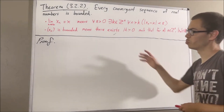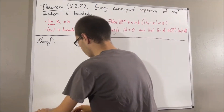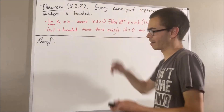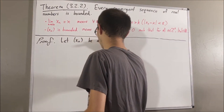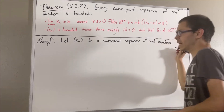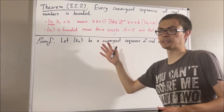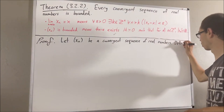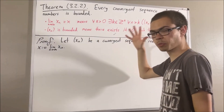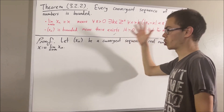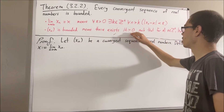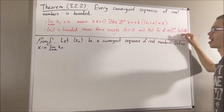Okay, so now let's get into proving this theorem. To start out, let's give ourselves a convergent sequence of real numbers — I'll call it xn — and we'll say that the value xn converges to is x. In order to complete the proof, all we've got to do is show that xn is bounded, which means we want to find a positive real number that makes the boundedness statement turn out true.